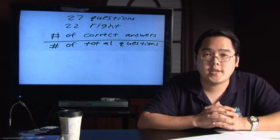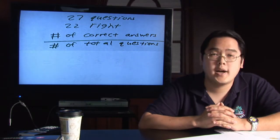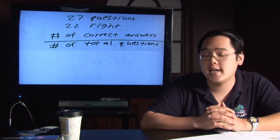You take the number of correct answers, the number of questions that the person got right, and you divide it by the total number of questions that were on the test.